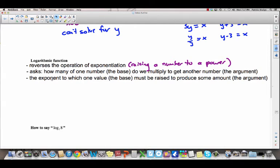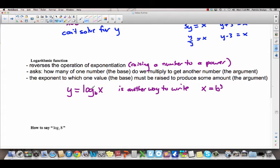Basically, a logarithmic function asks, how many of one number, the base, do we multiply to get another number, the argument? A logarithmic function is an exponent. It's the exponent to which one value, the base, must be raised to produce some amount, the argument. So here's how it looks. Y equals log subscript of b, x, is another way to write what we wrote up top. So x equals b to the y power. These two things are equivalent to each other.